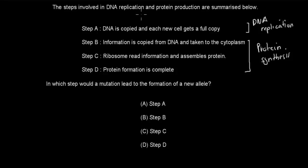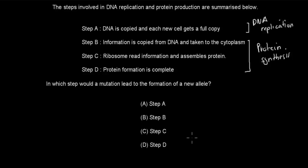Next question. Steps involved in DNA replication and protein production are summarized: Step A — DNA is copied and each new cell gets a full copy; Step B — information is copied from DNA and taken to the cytoplasm; Step C — ribosomes read the information and assemble protein; Step D — protein information is complete. Step A is DNA replication; steps B, C, D are protein synthesis. In which step would a mutation lead to the formation of a new allele? Pause the video and attempt the question.